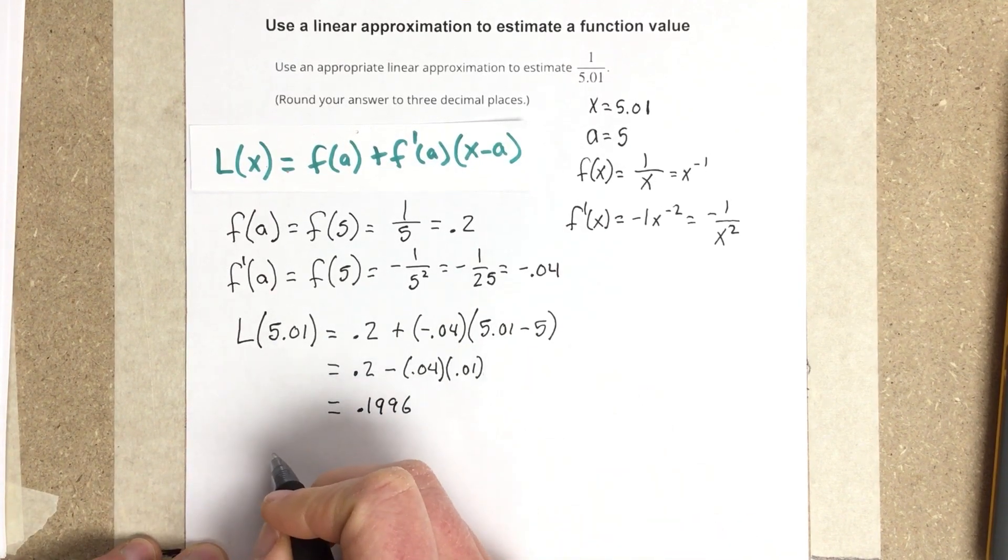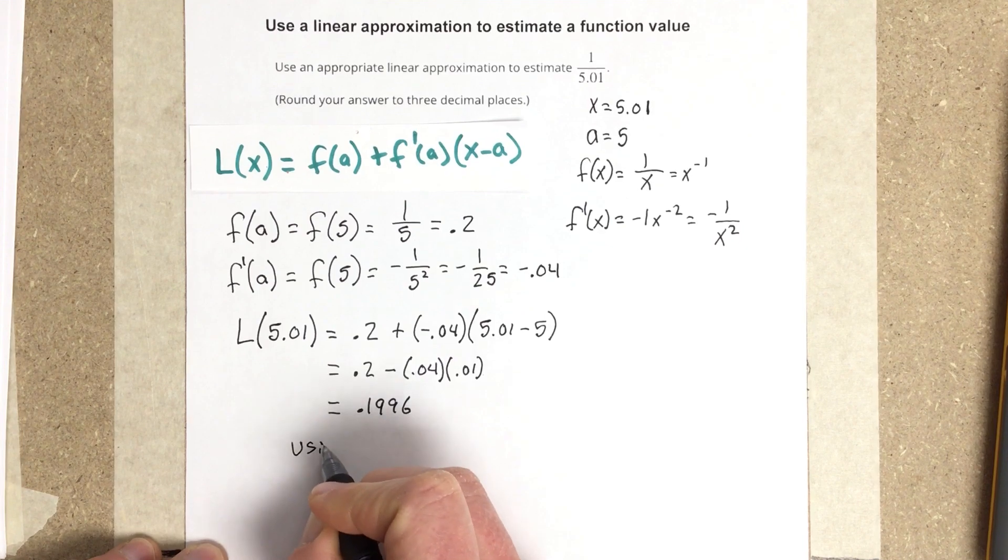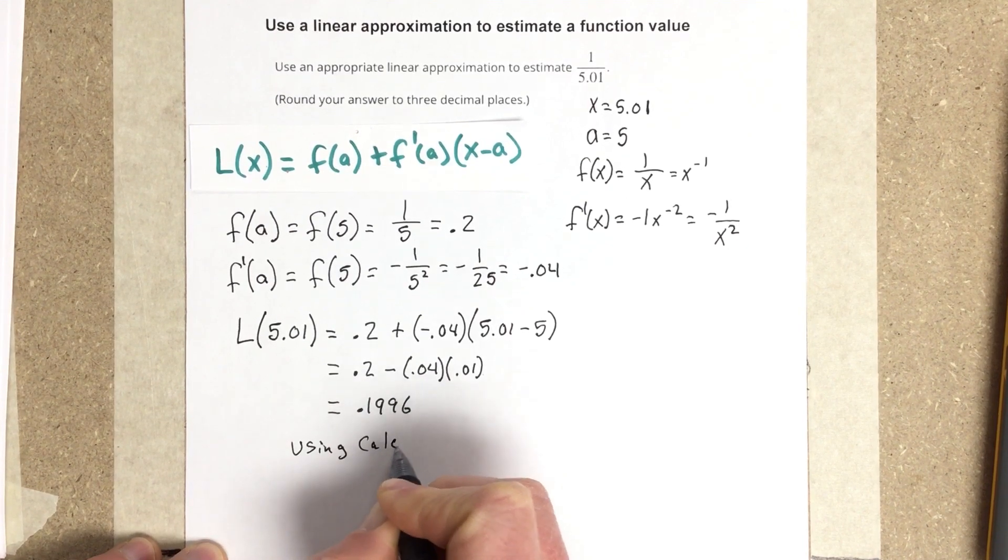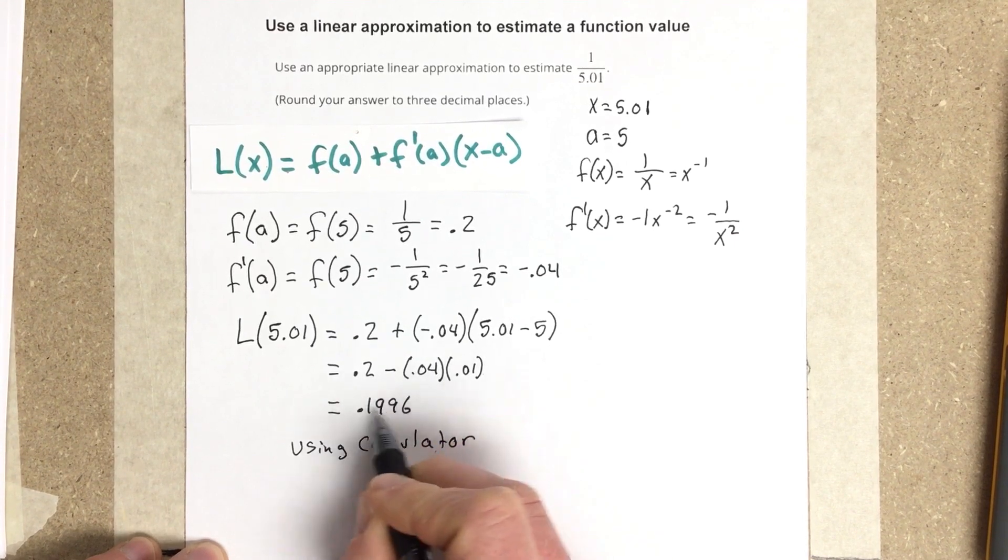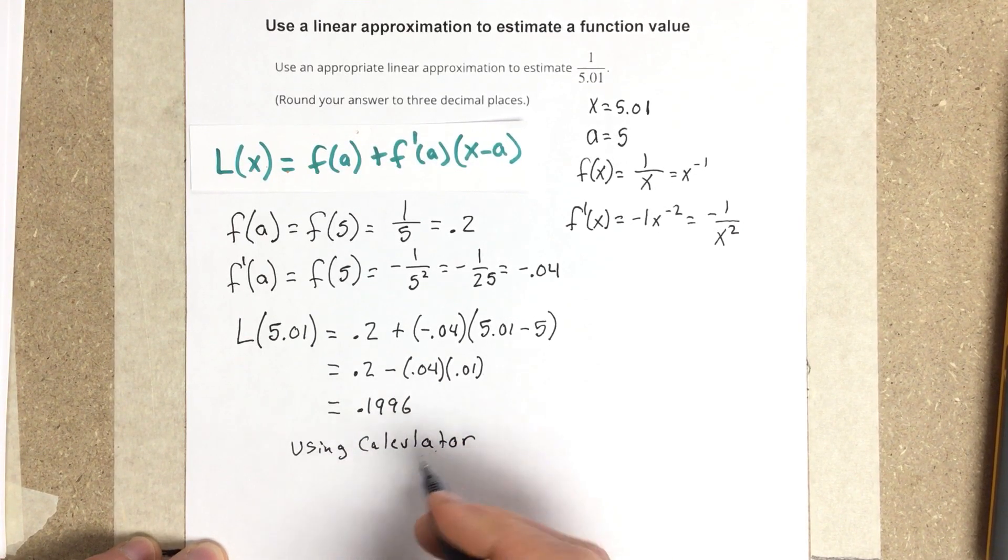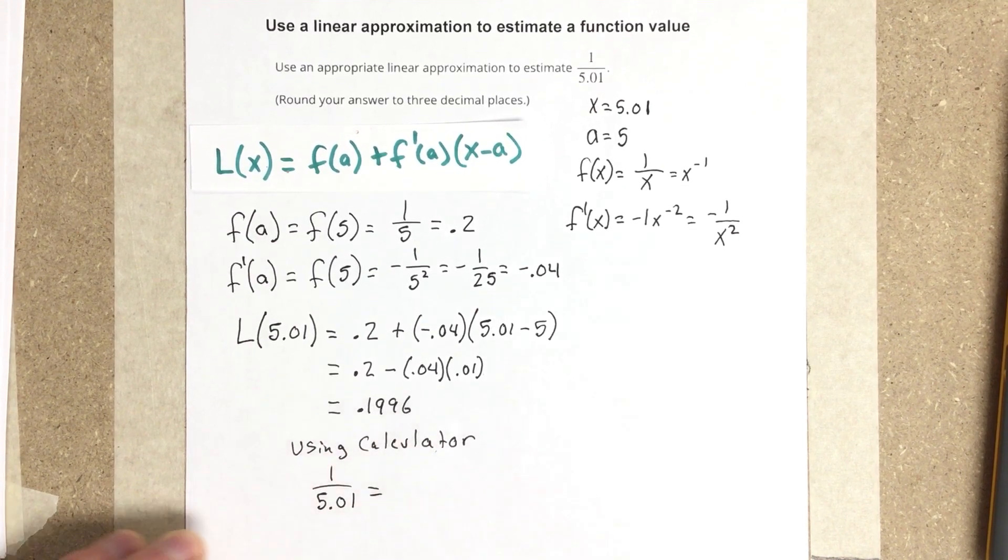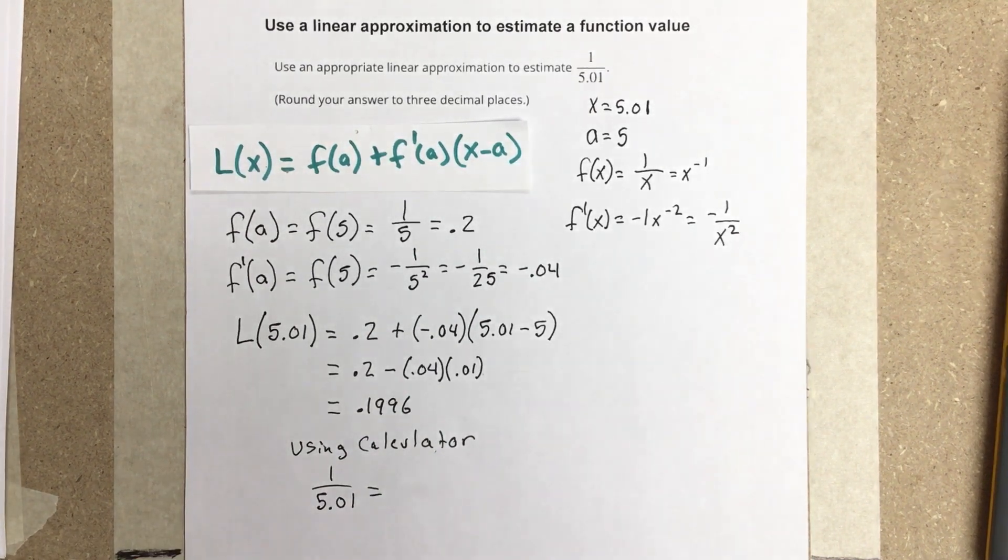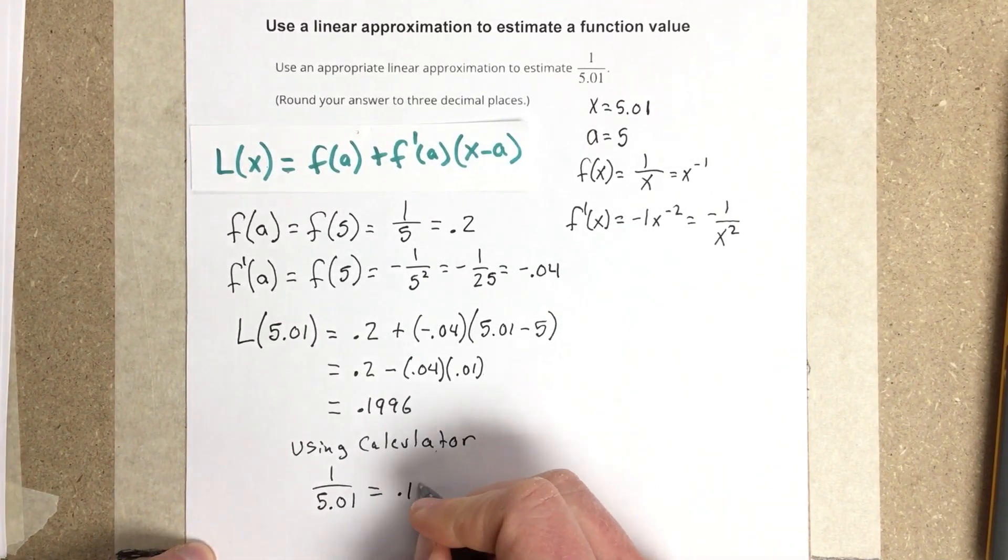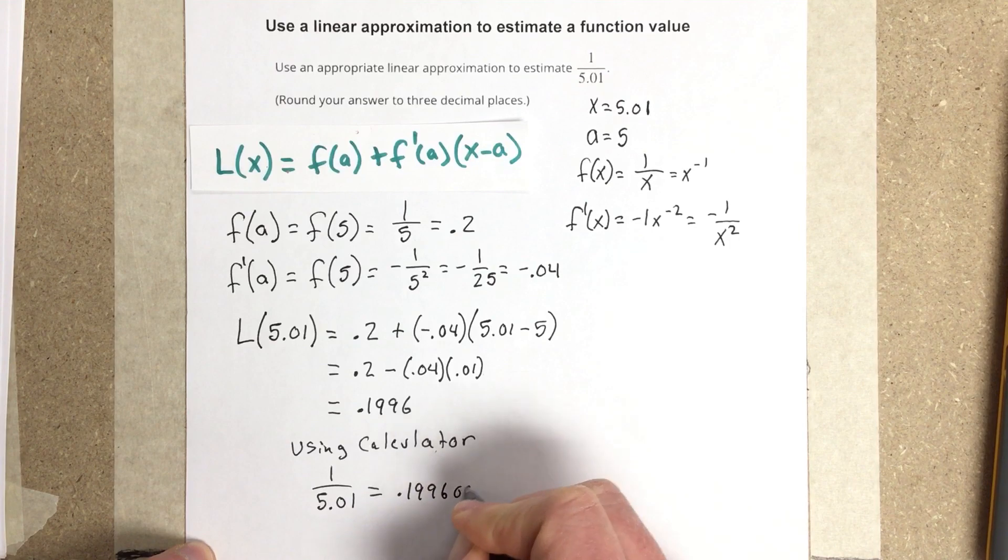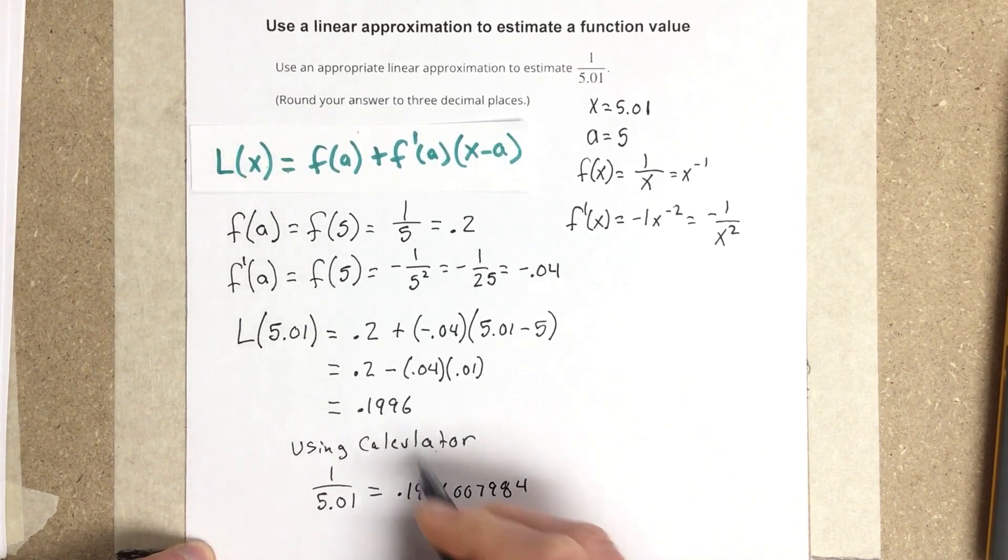So then I can say, what is really the value for, so let's say using calculator. Remember, we just used the tangent line basically to figure out this approximation. Now we're going to plug that value into the calculator and see what it gives us. 1 divided by 5.01 gives us 0.1996007984. And you can see that's really close to what we got there.